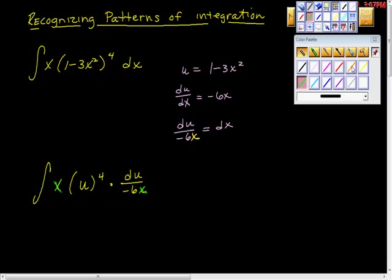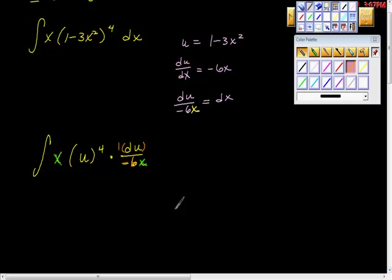And then I'm also asking you to take a look at this and say, isn't this true, that this is actually negative one-sixth here, and it's a factor, so I can pull that here. So I'm going to rewrite it again. I'm going to cancel the x's out, and I'm going to get negative one-sixth times u to the fourth du.